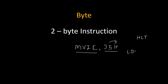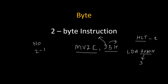And if a four-digit number is given in the instruction — for example, LDA 7080H — then it is a three-byte instruction. There is no instruction with a three-digit hexadecimal number; instructions will either have no number, a two-digit number, or a four-digit number. So: no number = one-byte instruction, two-digit number = two-byte instruction, four-digit number = three-byte instruction. That is why MVI R, data is a two-byte instruction.